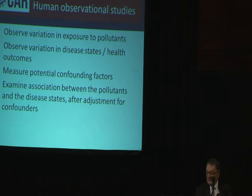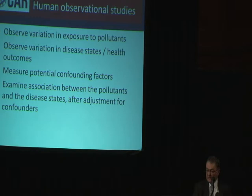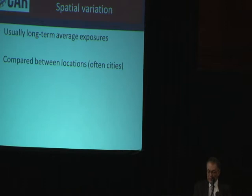We then examine the association between the pollutants and the disease states after adjusting for these confounders. In practice we have more sophisticated statistical methods for doing this, but it's in principle the same thing. So we observe the variation, and I explained earlier how important it is to have variation in exposure in order to be able to draw conclusions and see associations.